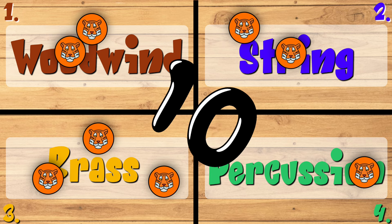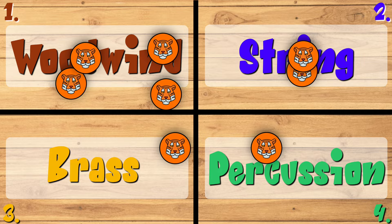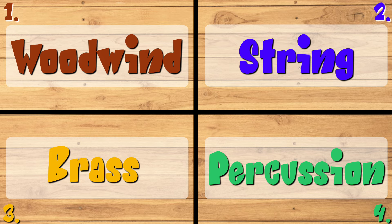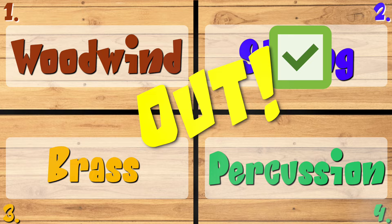Find corner one, two, three, or four. Which family is this instrument a part of? Let's listen again. Show with your fingers the family corner the instrument is in. The double bass is part of the string family. So if you are in the string family corner, sorry, you are out. On to the next round — ready, set, go.